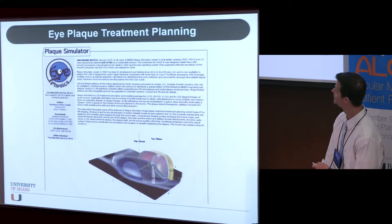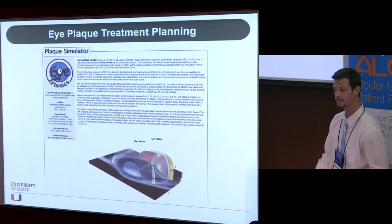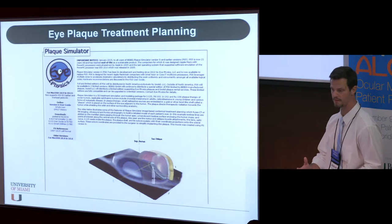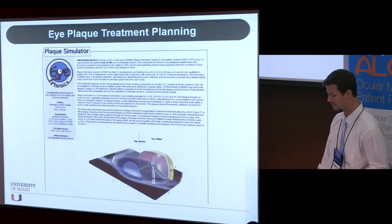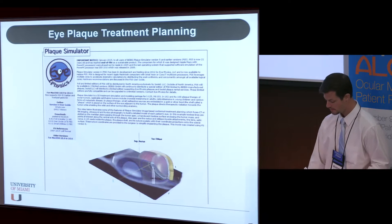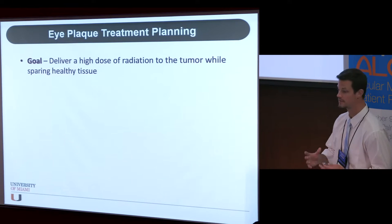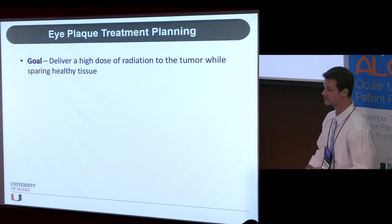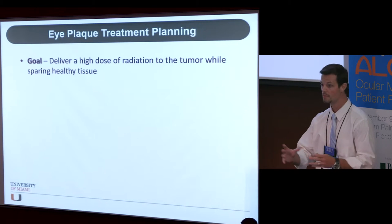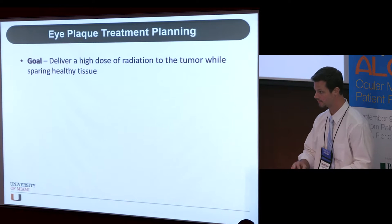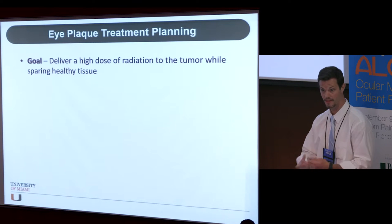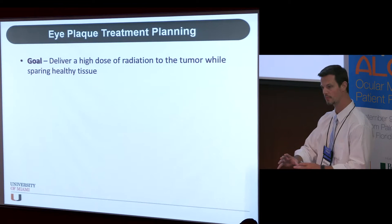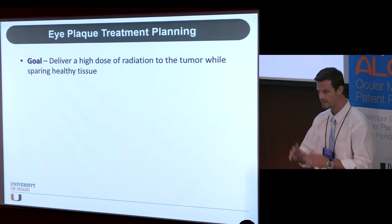So what we now have is a piece of software called the Plaque Simulator. This was developed over years at the University of Southern California, and we've recently got this software. We've commissioned it. And what this allows us to do is it really allows us to customize the plaque for every patient. So the goal, again, is to deliver a very high dose to the tumor, but we don't want a high dose to go to the optic nerve, the macula. Dr. Harbour talked about all the complications that can arise from the radiation damage. So we want to keep the radiation away from those areas and give it just to the tumor.